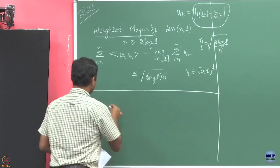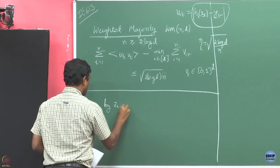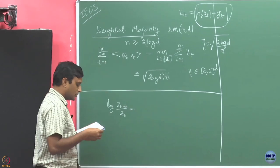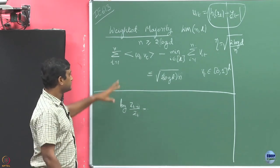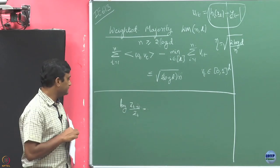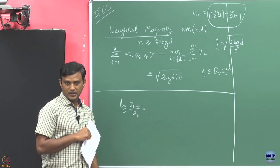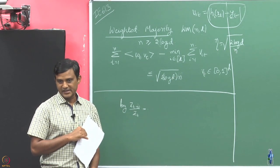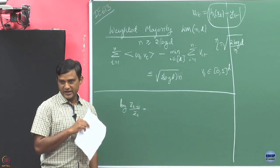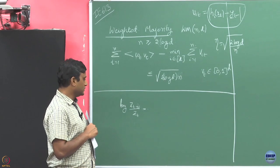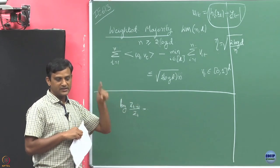The way we are going to do the proof is: we are going to consider the quantity Z_t and find a lower bound and an upper bound on it, then manipulate to get what we want. We will end up with this relation. So Z_{t+1} — how did we define it? Z_t is nothing but the sum of the weights W_i tilde. We call Z_t the potential in round t+1, which is the sum of all the weights in that round.